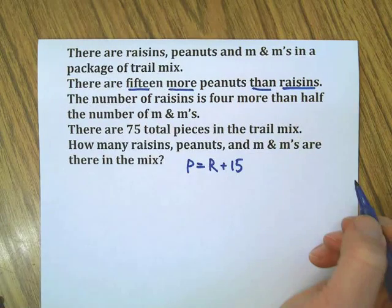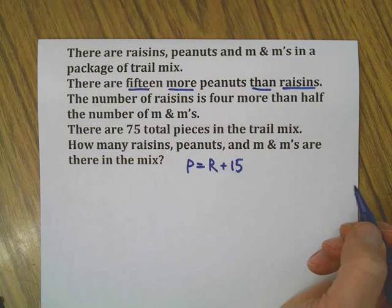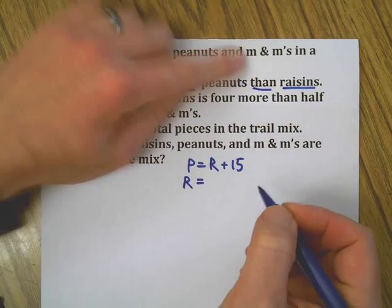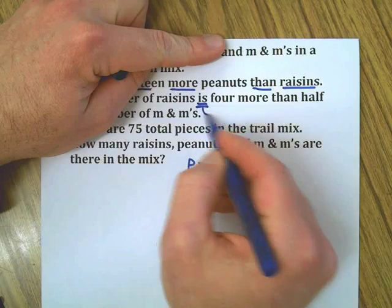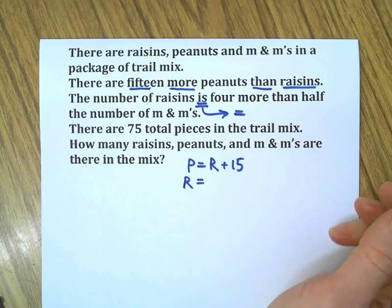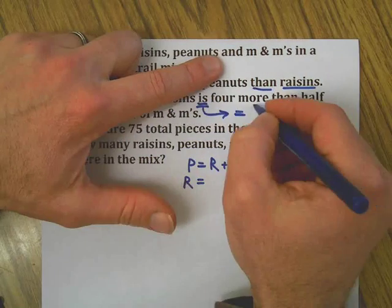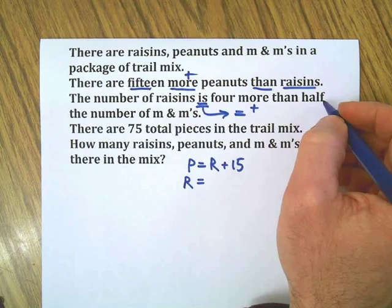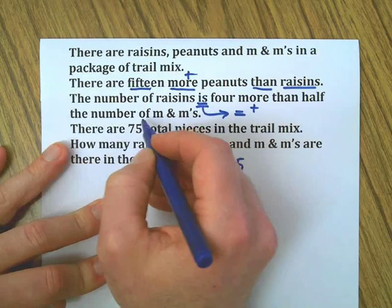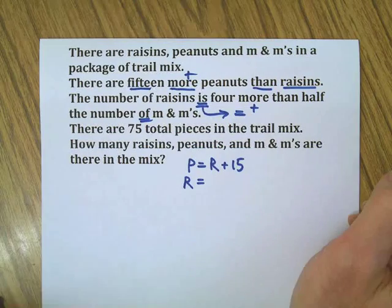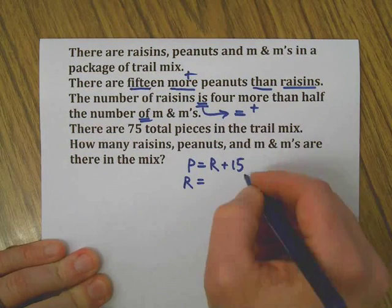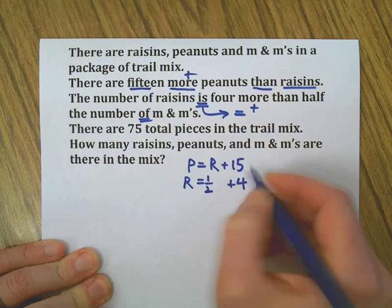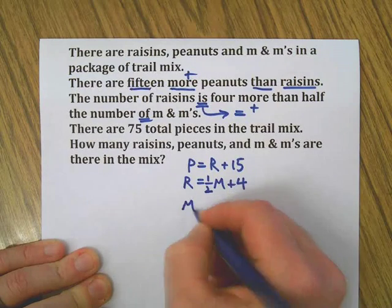Let's start here: 15 more peanuts than raisins, so P = R + 15. Now let's go on. The number of raisins is—whenever you see the word 'is' in a sentence in a math problem, that's the equal sign. More, of course, is the plus sign. Half—you get the idea. The word 'of,' by the way, is always multiply.